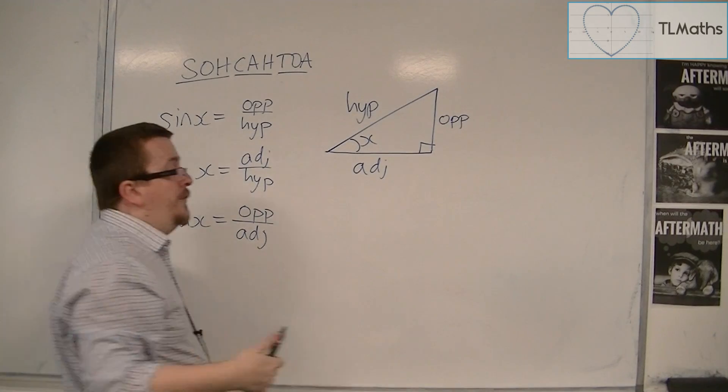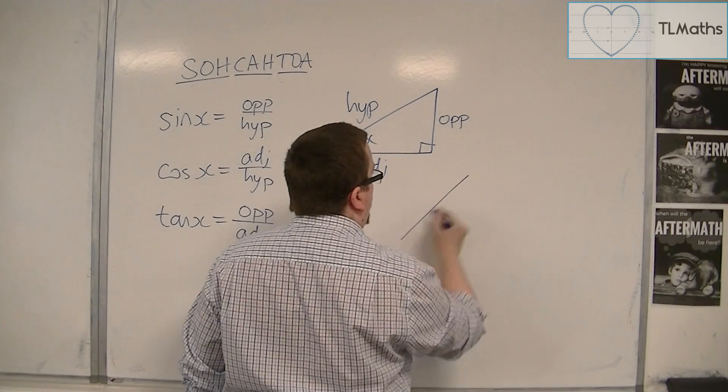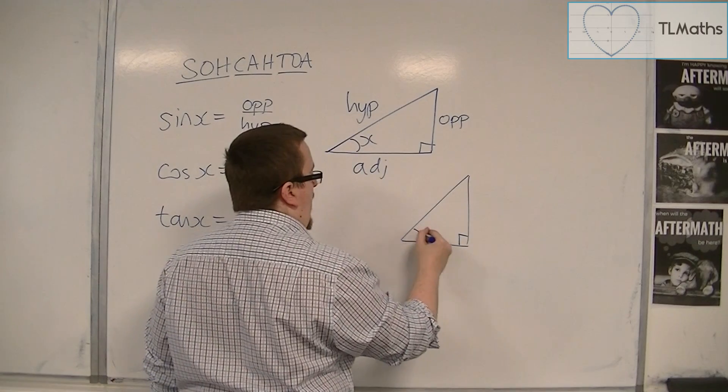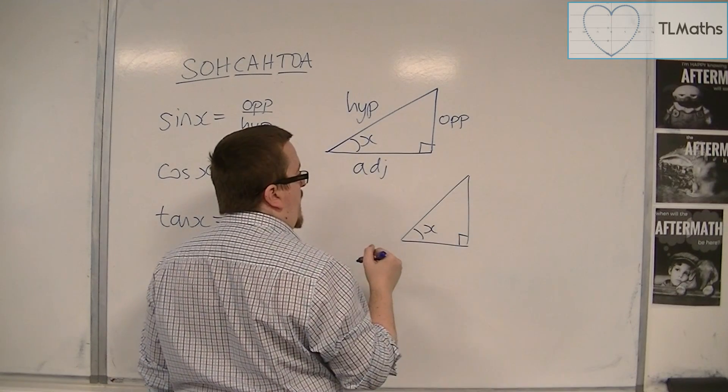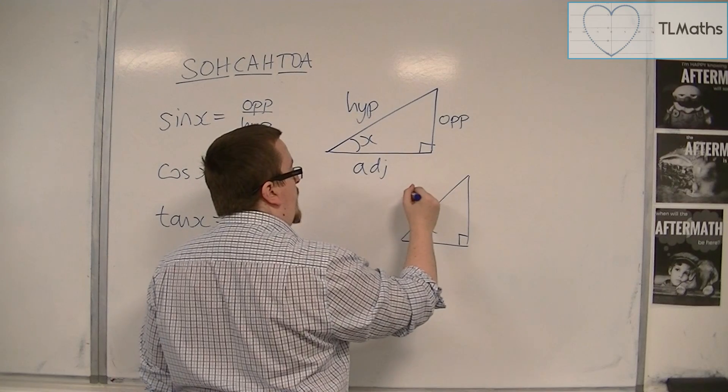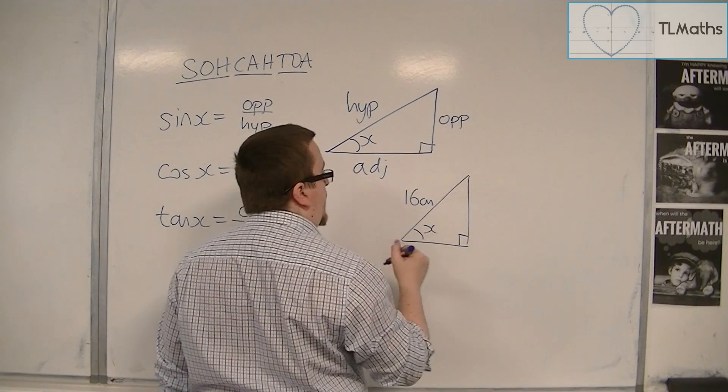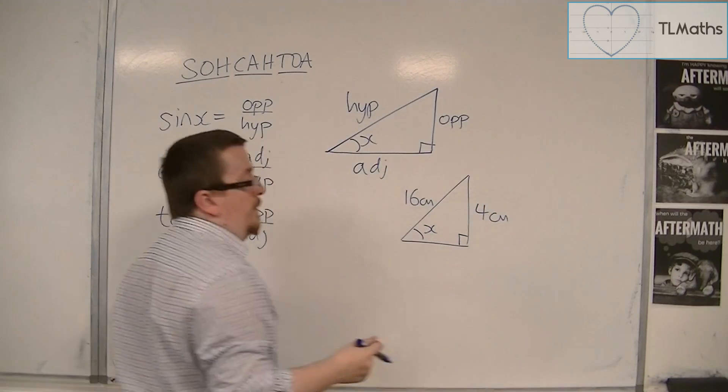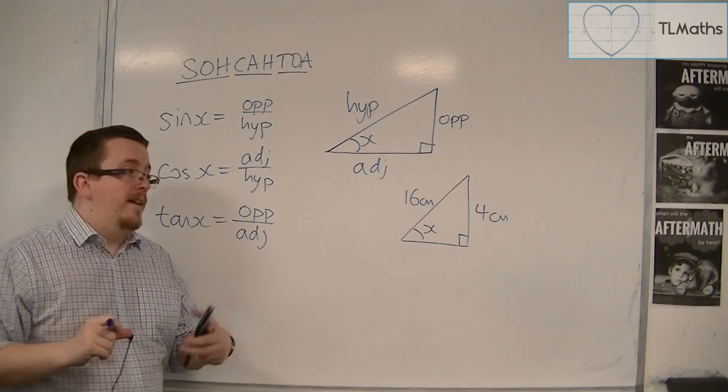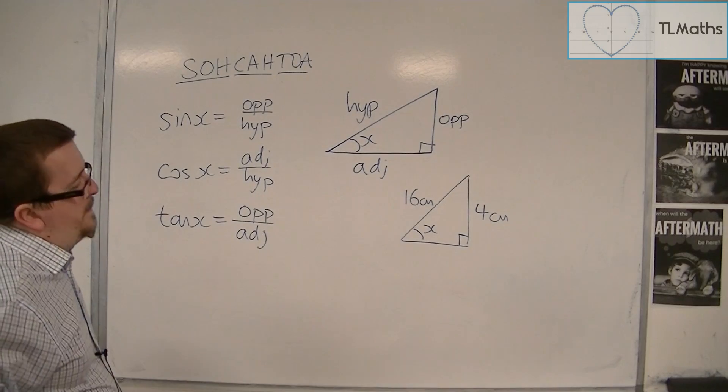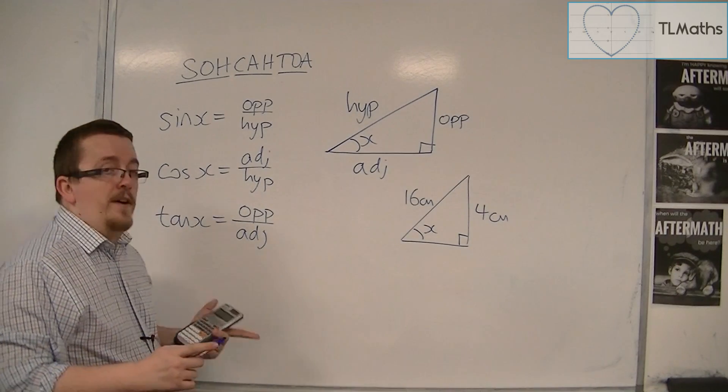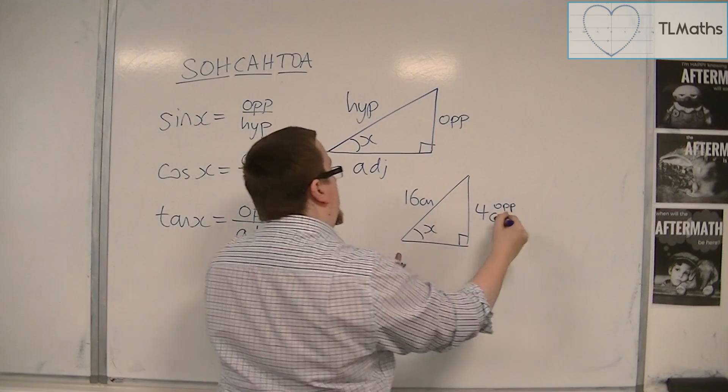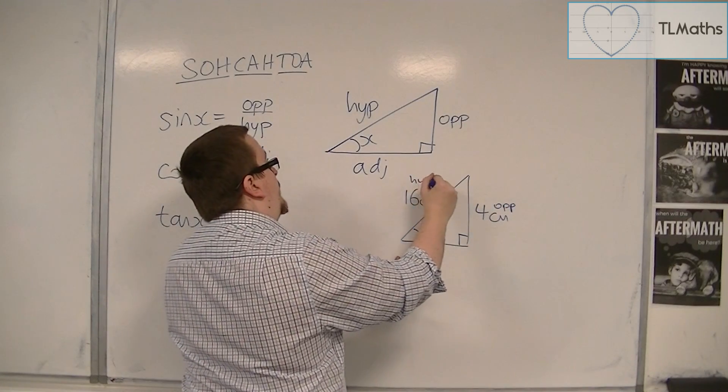So, for example, if we had a right-angled triangle like this, and I wanted to know that angle, and I was given that this is 16 centimetres, and this is 4 centimetres. So not very to scale, I know, but that doesn't matter. What I need to do is identify that here I have the opposite side, that's what I've been given, and I've been given the hypotenuse.